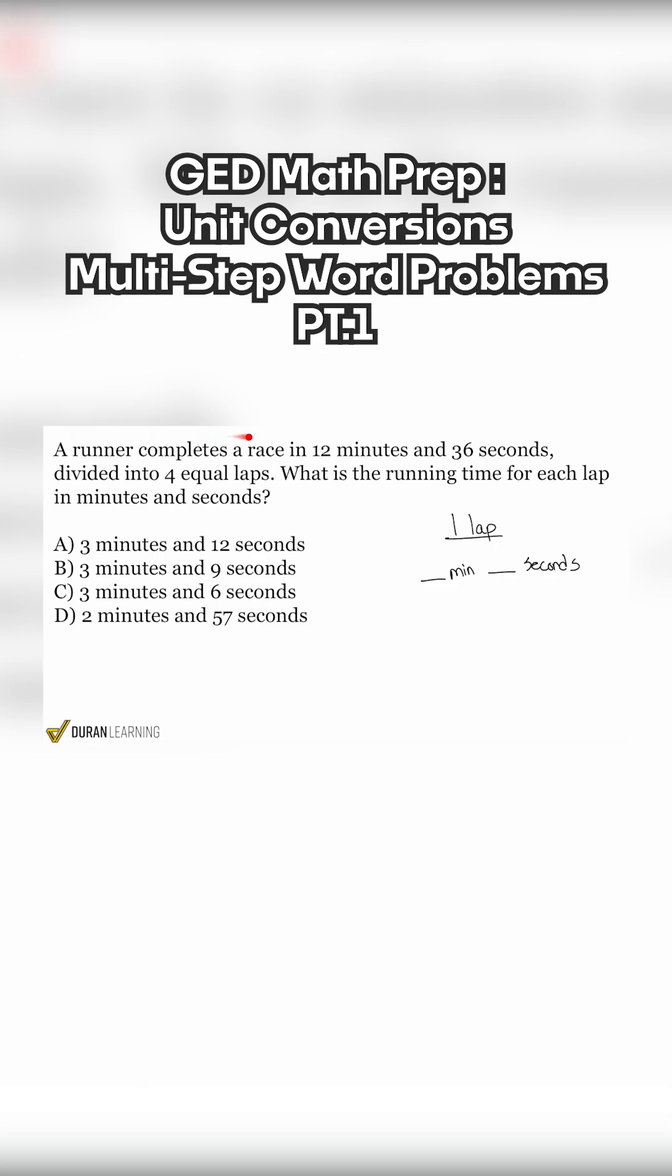We see that a runner completes a race in 12 minutes and 36 seconds. Let's highlight that there. Completes in 12 minutes and 36 seconds. That's the total time.